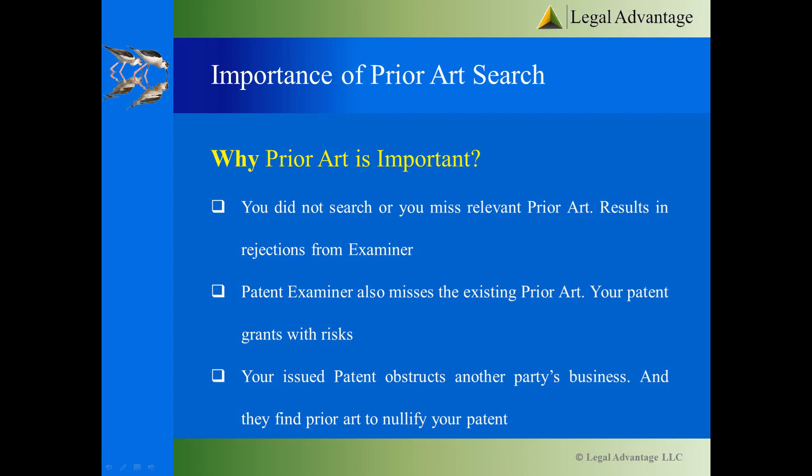Whether you miss the prior art that is available to the public and the patent examiner finds it, in that case it will result in a rejection based on the prior art reading on the claims of your patent application, or a combination of two pieces of prior art rendering your patent application obvious to the existing knowledge.